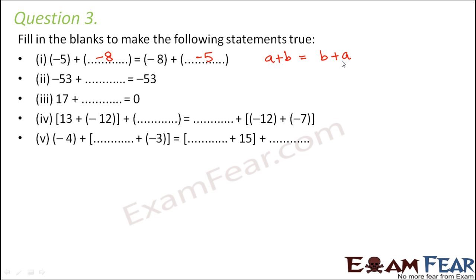Let's look at the second one. Minus 53 plus dash is equal to minus 53. So you see the same number you get. So what does that integer, which when added to any integer, gives the same number? It retains the identity. Yes, I am talking about the additive identity. And which is the additive identity? It is nothing but 0.